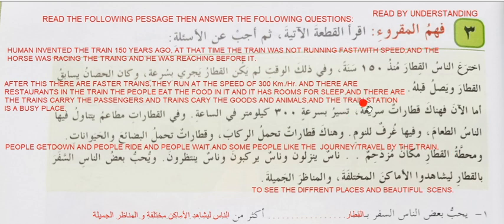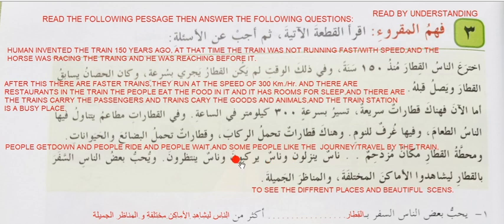Wa muhatta means station — muhatta al-qatar, the train station. Makaan muzdahim — busy place. Makaan means place, muzdahim means busy. Naas yanzuluna — people get down. Wa naas yarkabuna — they ride. Wa naas yantazurun — they wait. Wa yuhibu baazun naas al-safar bil-qatar — and some people like the journey or travel by train. Li-shahidwa al-amaakena al-mukhtalifa — to see different places. Amaakina is the plural of makaan.